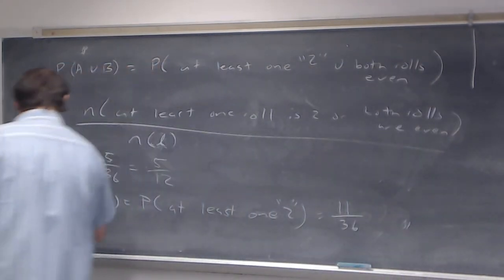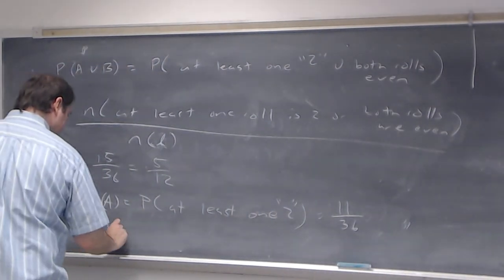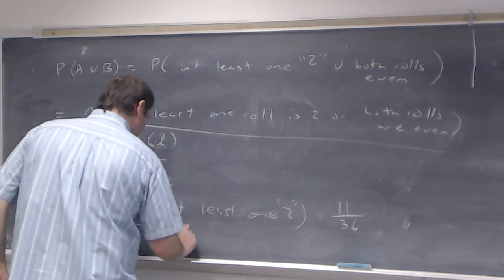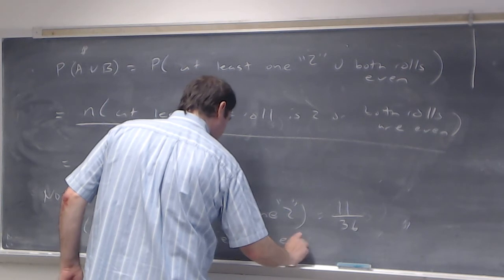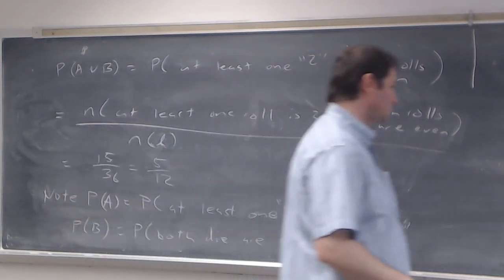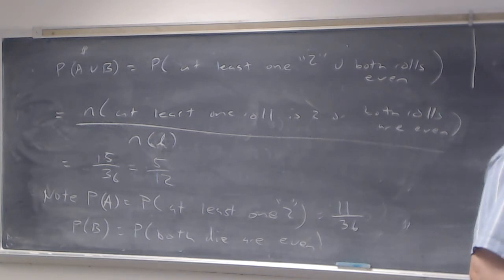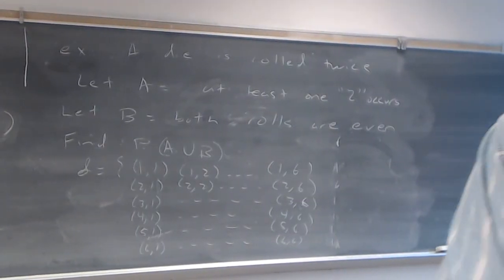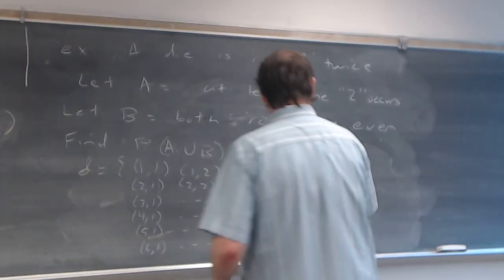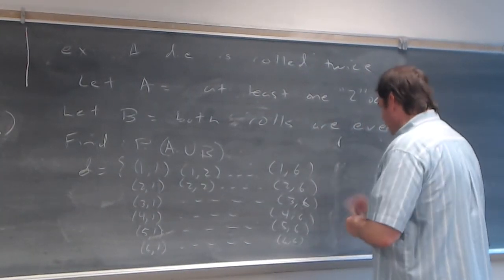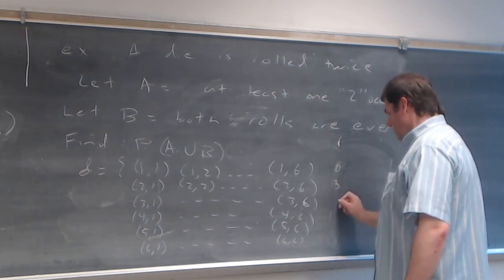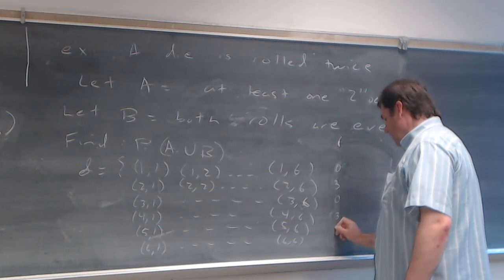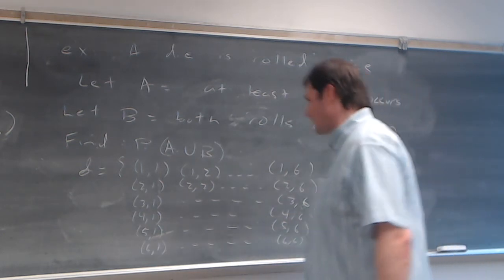Let's look at the probability of B — both dice are even. Going back to the sample space: it happens zero times in the first row, three times in the second row (2,2), (2,4), (2,6), zero in the third, three in the fourth, zero in the fifth, three in the sixth. That ends up being nine, so P(B) = 9/36.